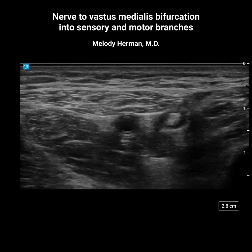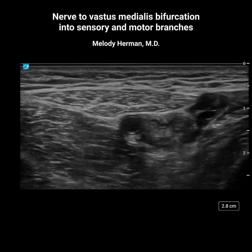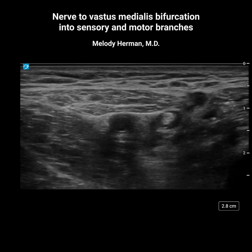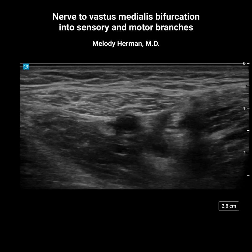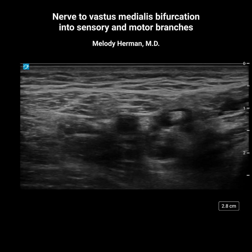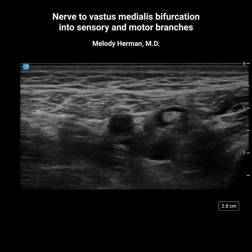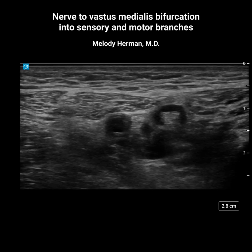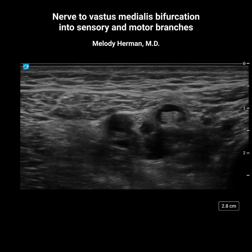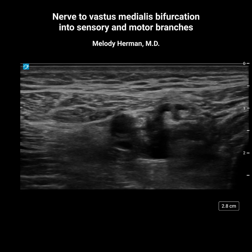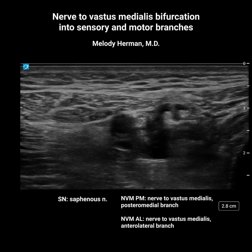and an anterior lateral branch which is primarily motor. If we think about this femoral triangle post-block scan, it makes sense why an injection at the proximal end of the adductor canal after the nerve to vastus medialis is bifurcated might be more likely to be motor sparing than an injection at the level of the femoral triangle. When the block is performed more distally, we may be more likely to block the saphenous nerve and sensory branch of the nerve to vastus medialis, sparing the motor branch.